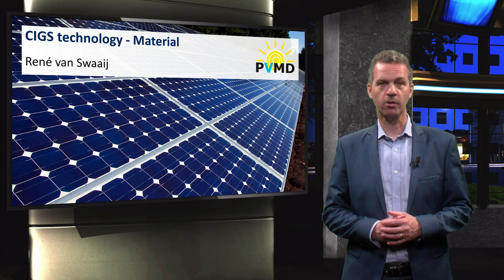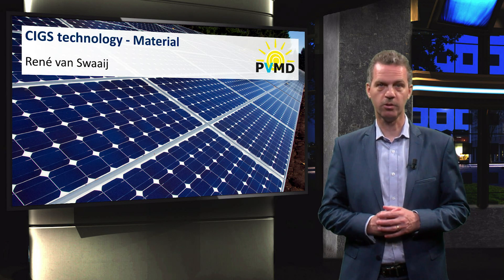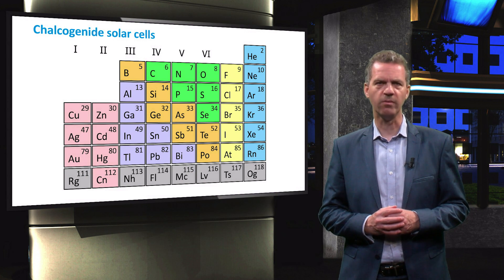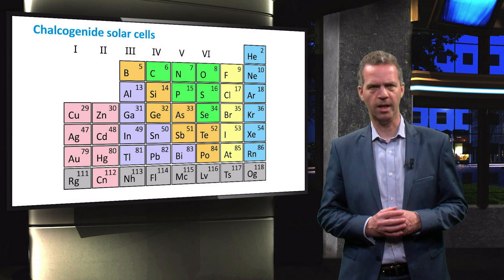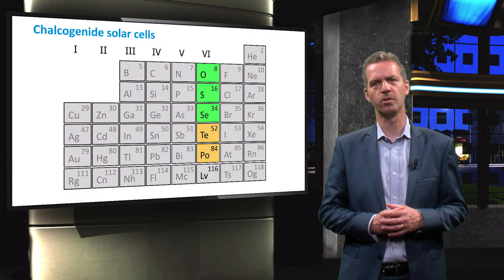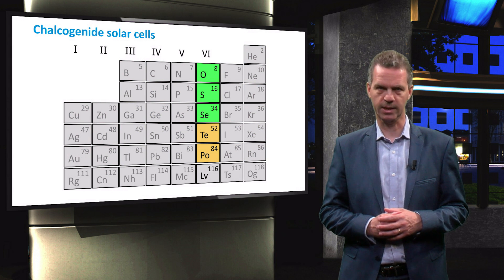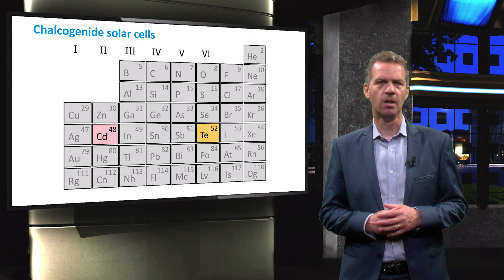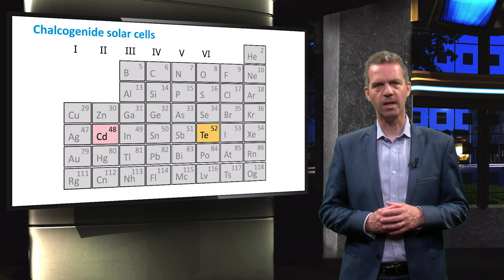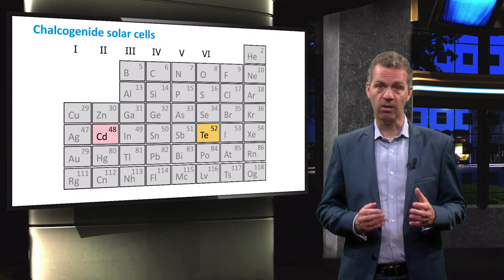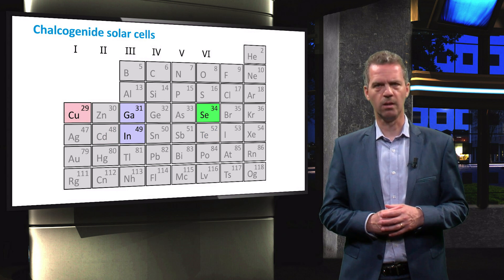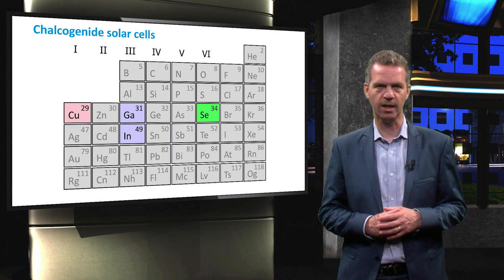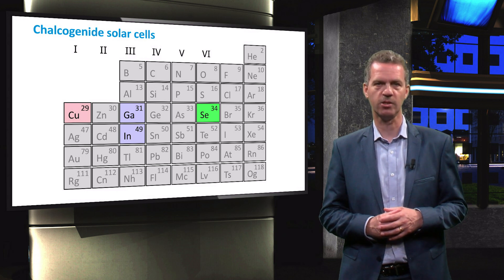In the next videos, we will discuss solar cell technologies based on chalcogenide materials. Chalcogenide is a chemical term that refers to all the compounds that contain chalcogen anions from group 6 in the periodic table, indicated with the Roman number 6. In a later video, we will discuss the cadmium telluride technology, which is based on the tellurium anion from group 6. In this video, we will introduce the group of chalcopyrite solar cells, primarily known from the copper-indium-gallium diselenide or CIGS solar cells.